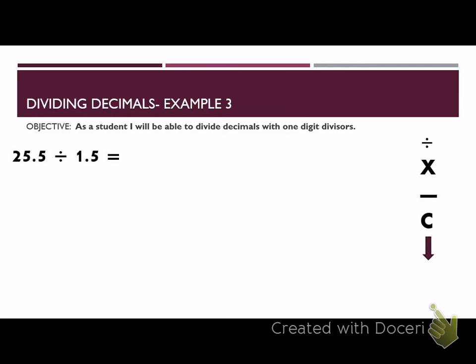We have 25 and 5 tenths divided by 1 and 5 tenths. This one is a little bit more difficult. Remember, the first number always goes inside the house. Then we have 1 and 5 tenths. Once again, we go ahead and our decimal on the outside in our divisor has one place away from the wall. Go ahead and do that and move it. Do the same thing on the inside. Once we move it on the inside, we put it on top, and we start our division.